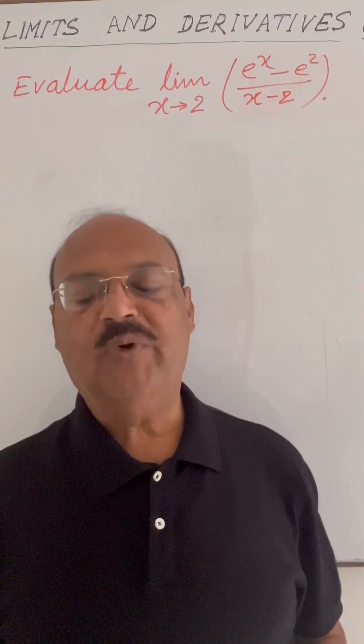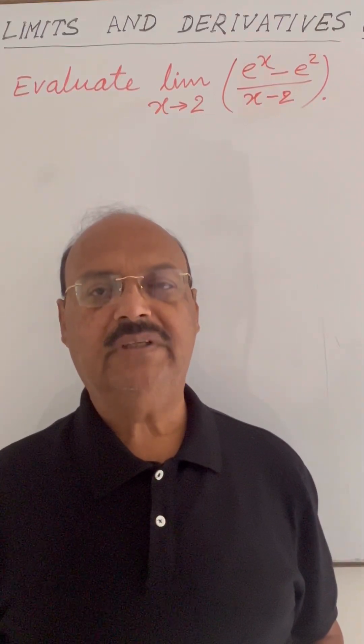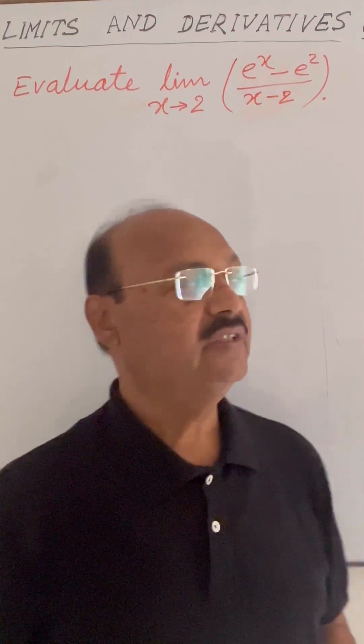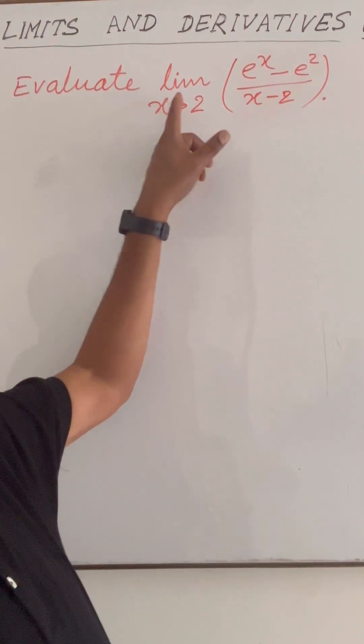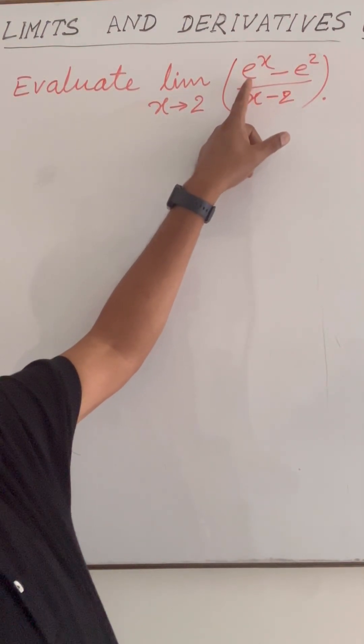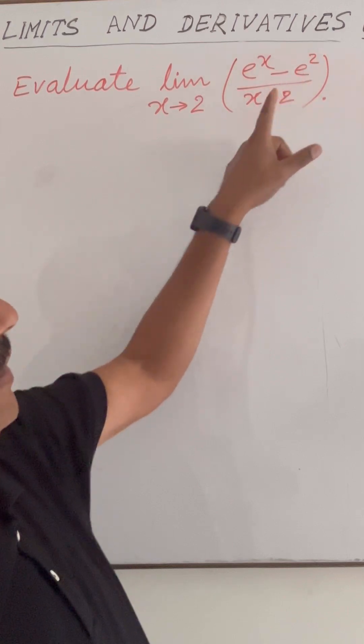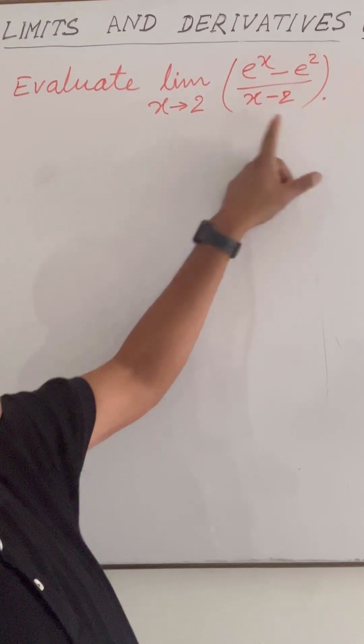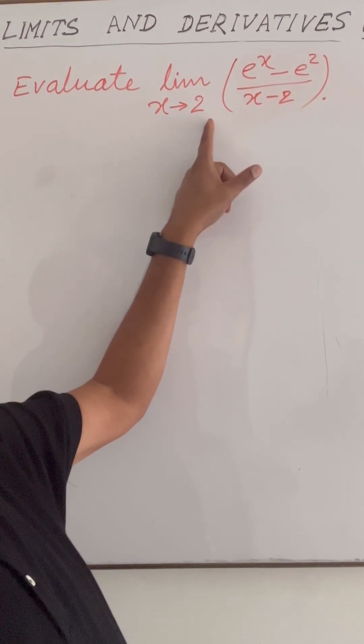Here we are discussing a very important question from the topic limits. The question is: evaluate the limit of the function e to the power x minus e squared upon x minus 2, when x tends to 2.